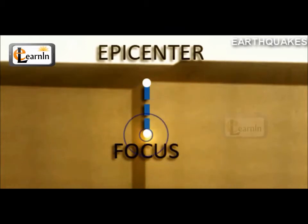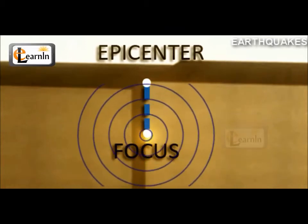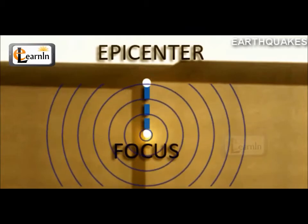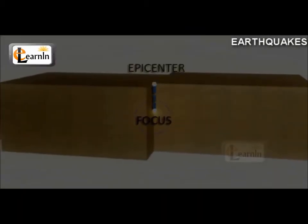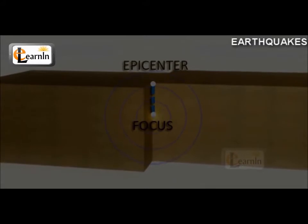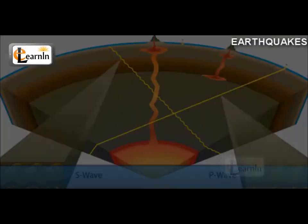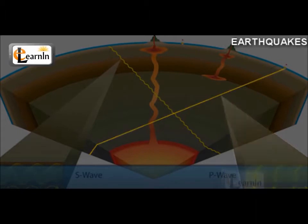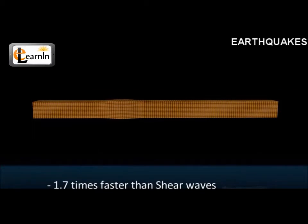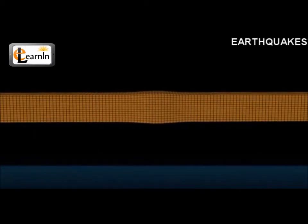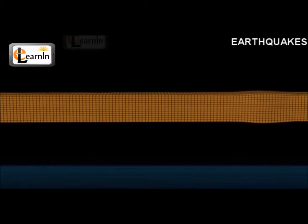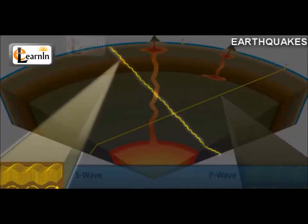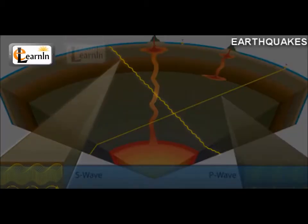There are three types of seismic waves that spread in all directions from the focus. They are the P, S, and L waves. The compressional waves are the first to reach the earthquake recording station as they travel 1.7 times faster than the shear waves, and are therefore called primary or P waves, while the shear waves are called secondary or S waves.